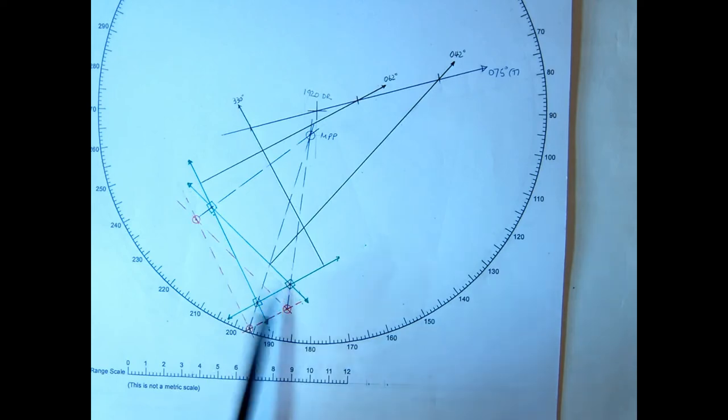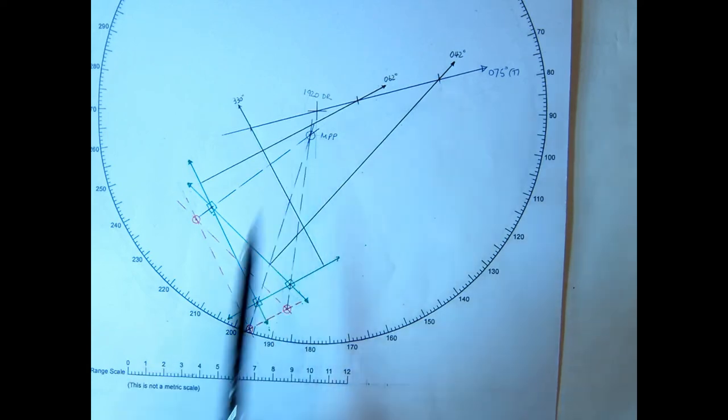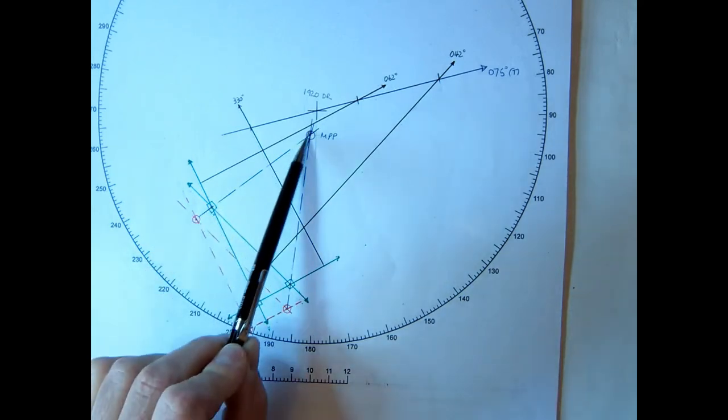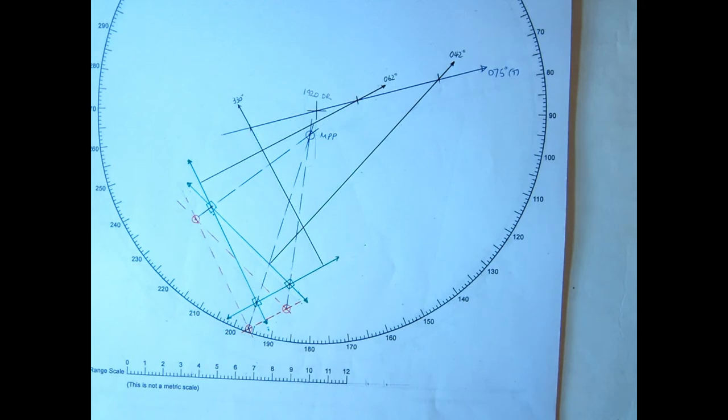Then I've put crosses on the first cocked hat. The second one in red, I've put circles. And we draw a line through the circle, through the square, through the circle, through the square, through the circle, through the square. And that will give us our most probable position.